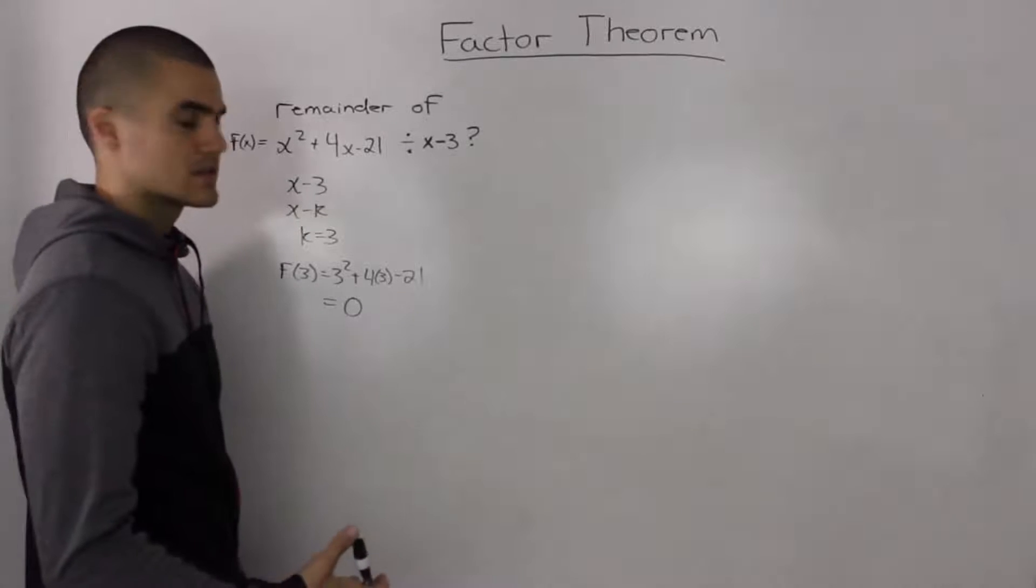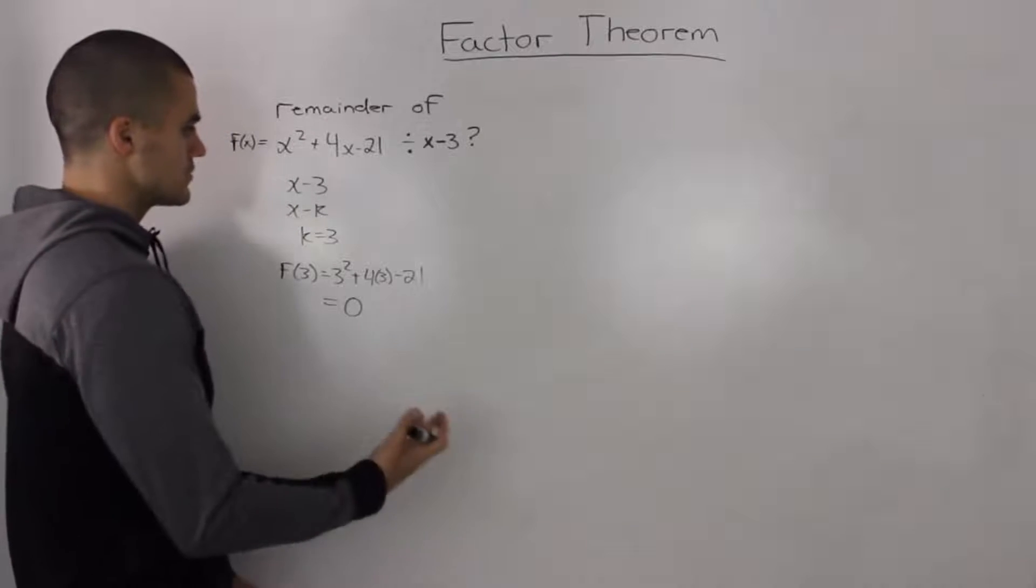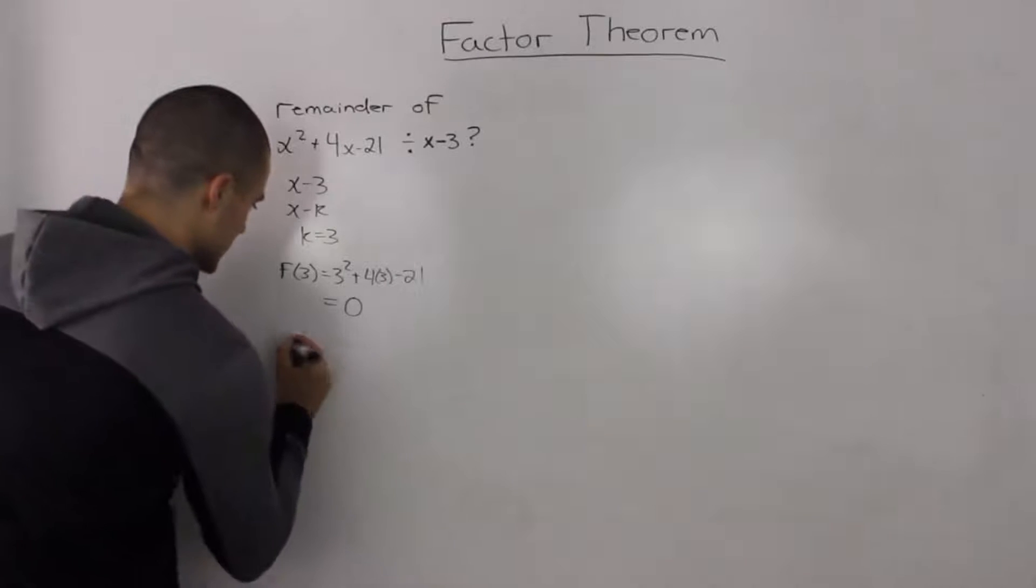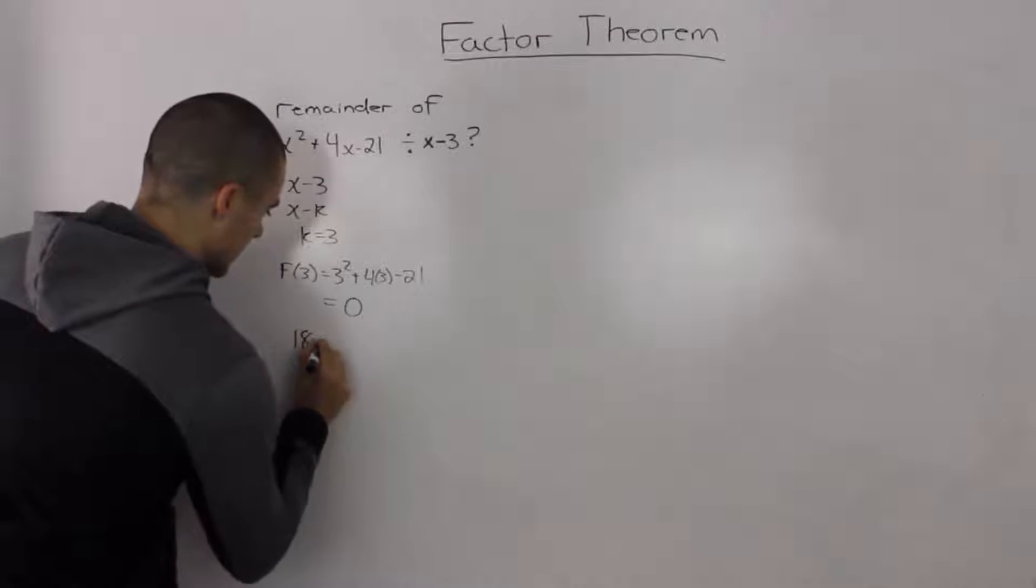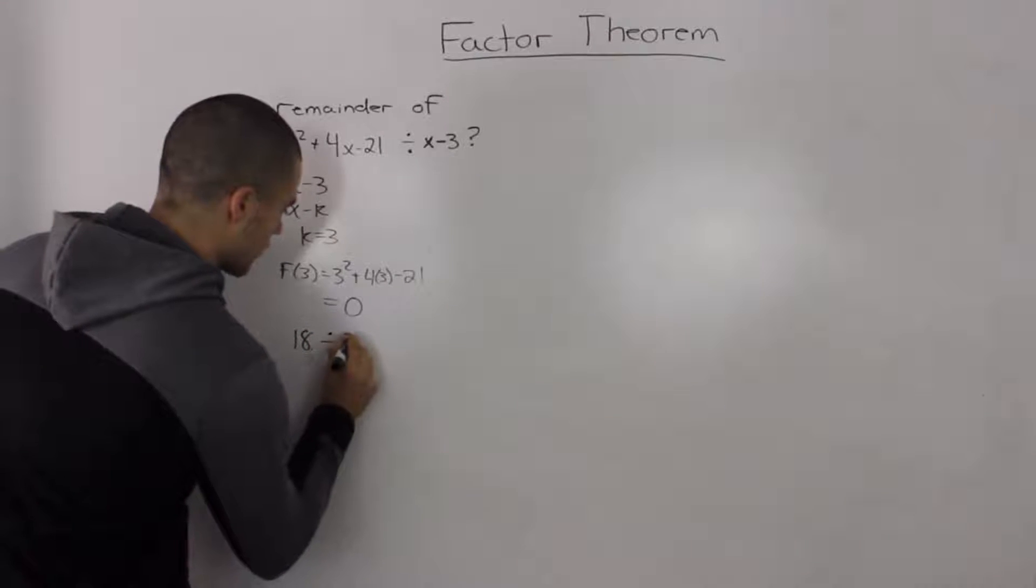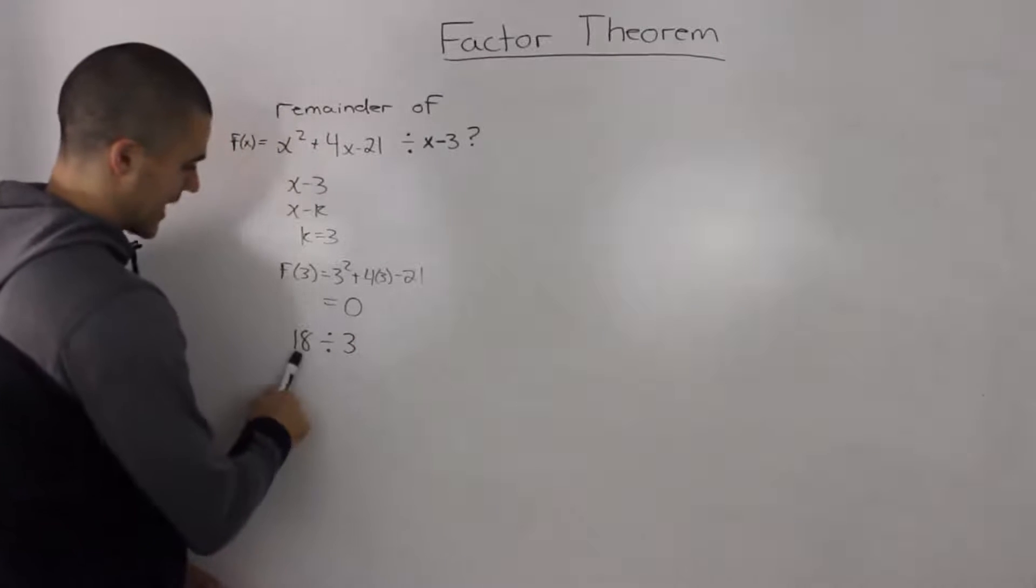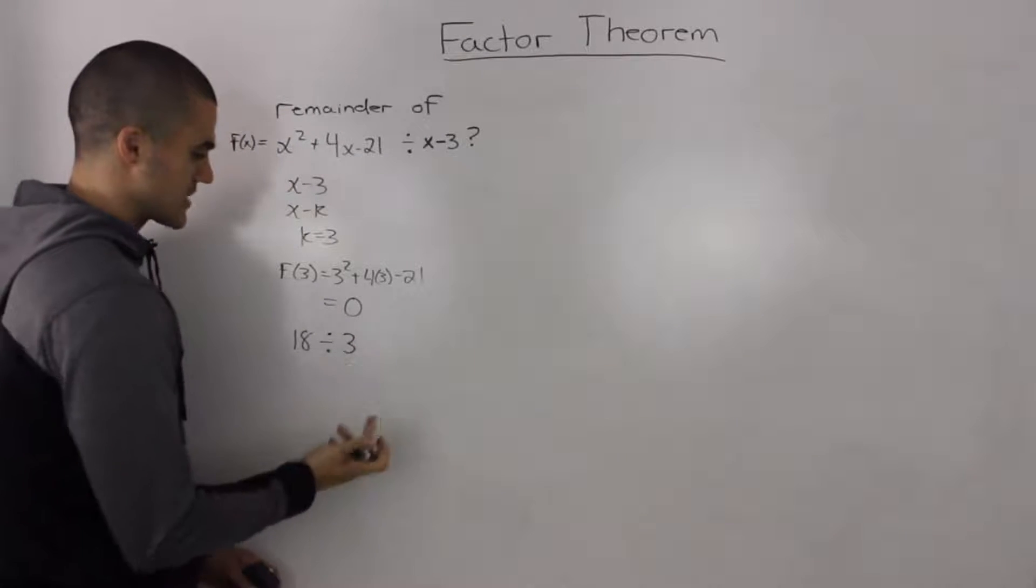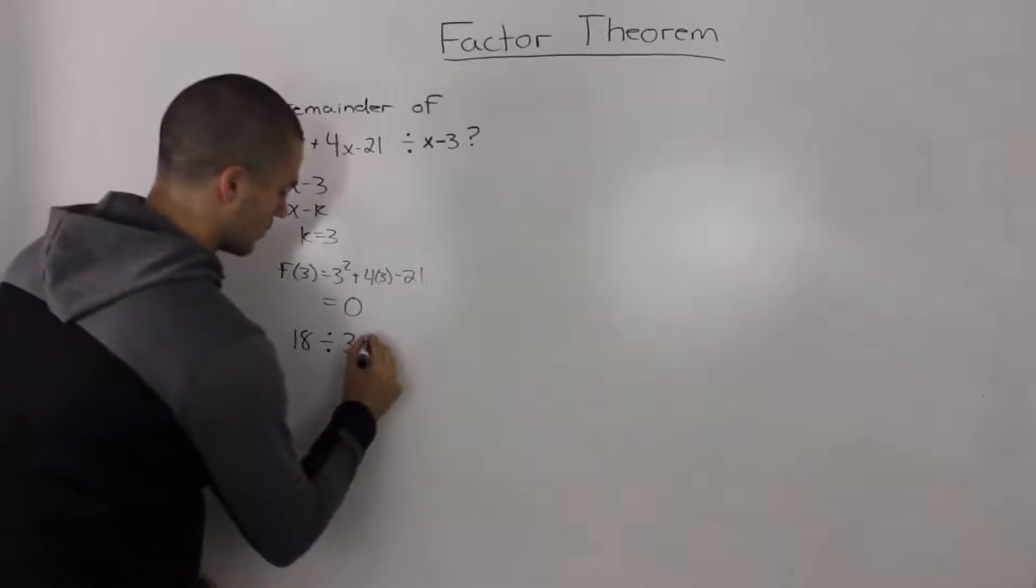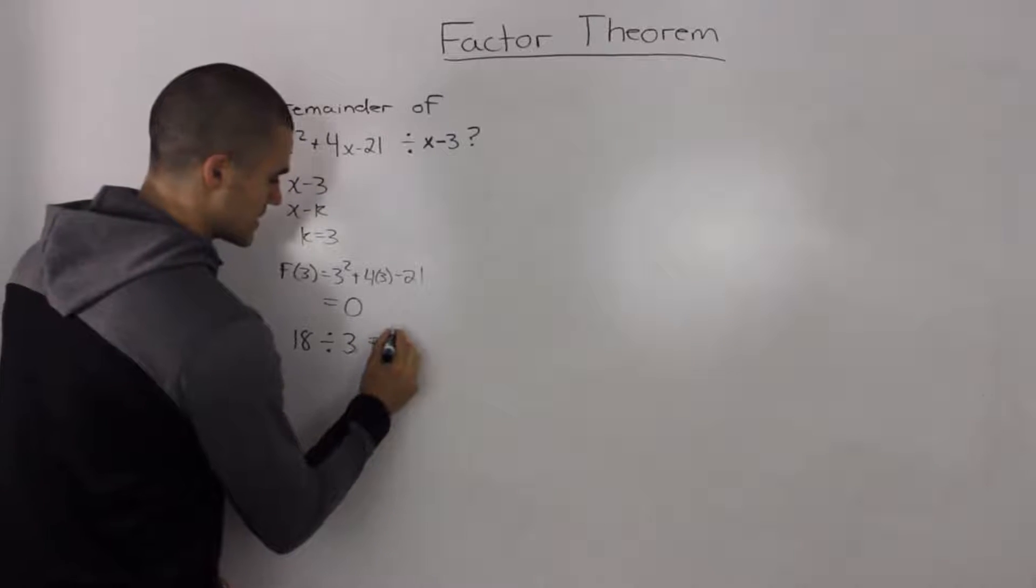Now what does a remainder of 0 really mean? Let's do an even simpler example. Say we take 18 and divide it by 3. 18 is our dividend and 3 is our divisor. 18 divided by 3, as we know, is 6.